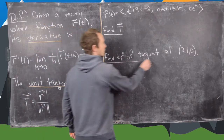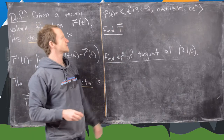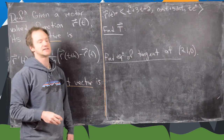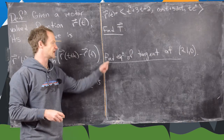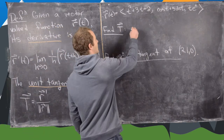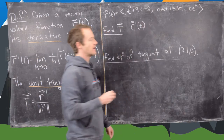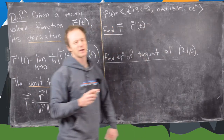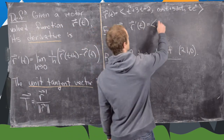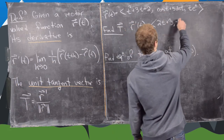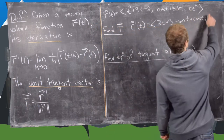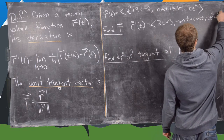We want to look at two examples, both built on the vector-valued function whose first entry is t squared plus 3t plus 2, second entry is cosine t plus sine t, and third entry is t e to the t. We want to find the unit tangent vector first, and then find the equation of the tangent at the point 2, 1, 0. To find the unit tangent vector, we first need the derivative. Taking the derivative of each entry gives us 2t plus 3, minus sine of t plus cosine of t, and using the product rule for the third entry, t e to the t plus e to the t.